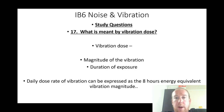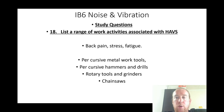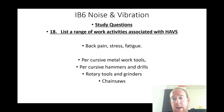What is meant by a vibration dose? It is the magnitude of vibration multiplied by the duration of exposure; the daily dose rate can be expressed as an eight-hour energy equivalent of vibration magnitude. List a range of work activities associated with HAVs: percussive metal work tools, percussive hammers and drills, rotary tools and grinders, and chainsaws.